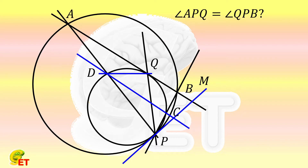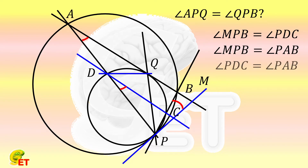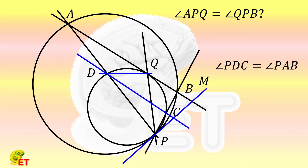Let's start to prove it. Angle MPB is the common tangent angle of the two circles. According to the alternate segment theorem in the small circle, it is equal to angle PDC, and in the big circle it is equal to angle PAB. So angle PDC and angle PAB are also equal, which means DC is parallel to AB.